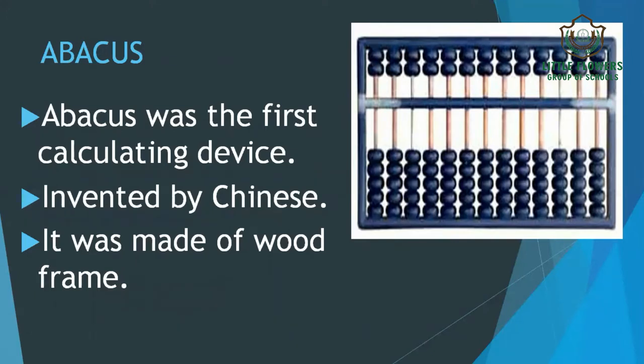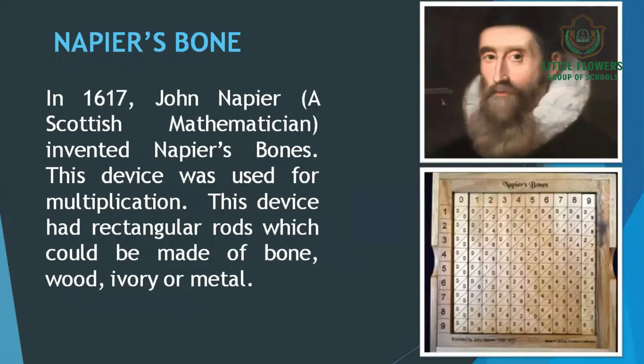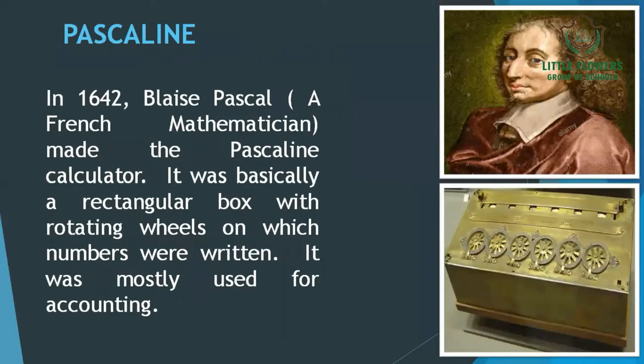The next device is Napier's Bones. In 1617, John Napier, a Scottish mathematician, invented Napier's Bones. This device was used for multiplication. It had rectangular rods which could be made of bone, wood, ivory, or metal. The numbers were written on these rods, as we can see in the image.